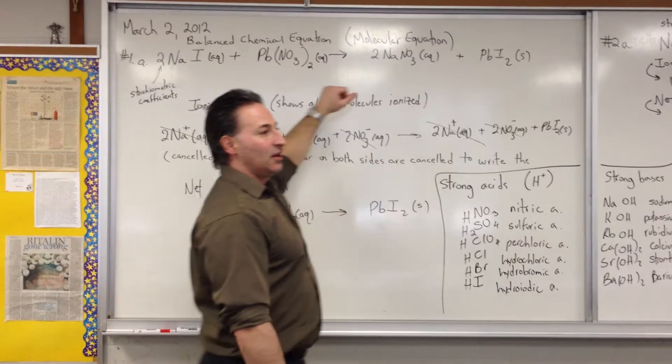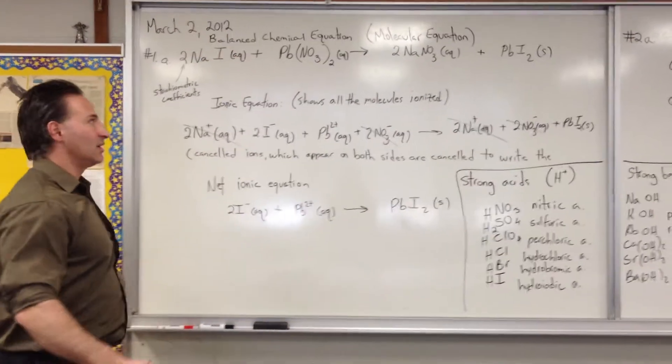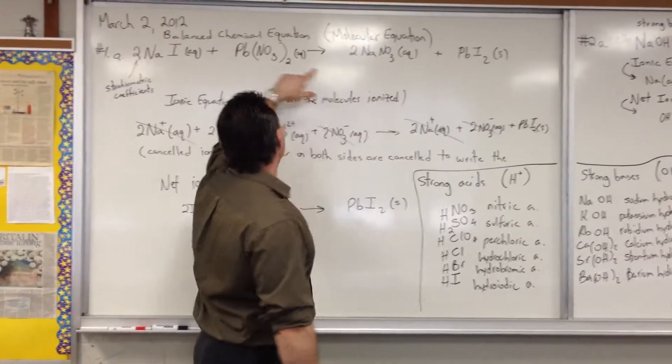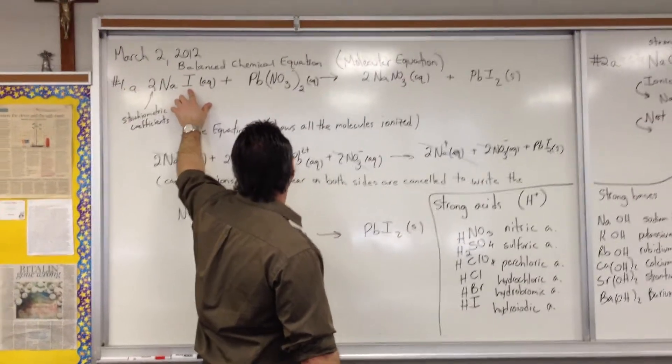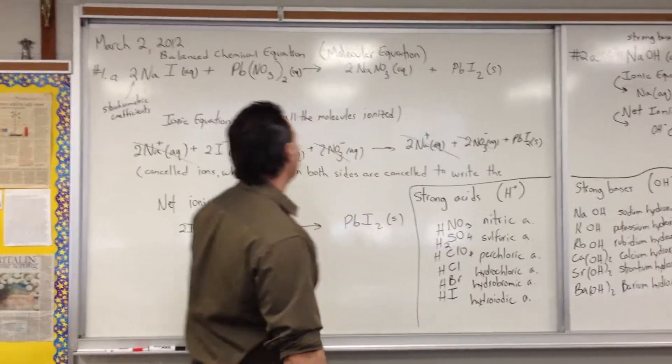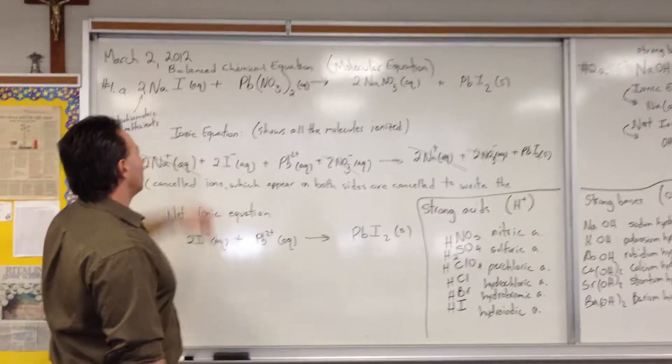You can't have elements disappearing into the ether. So if you have two sodium atoms on the left, you have to have two sodium atoms on the right. If you have two iodide atoms on the left, you have to have two iodides on the right, and so on. So we call this the molecular equation.